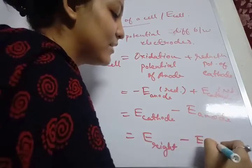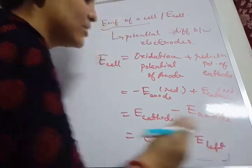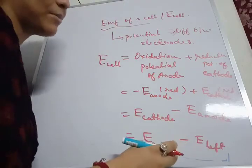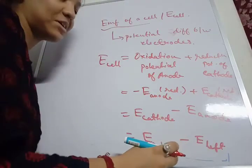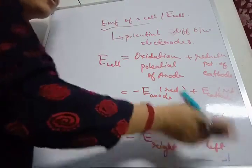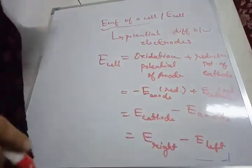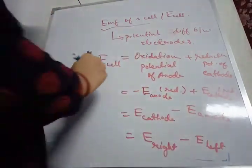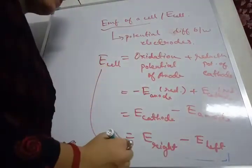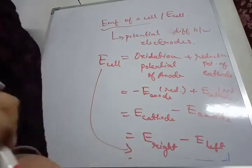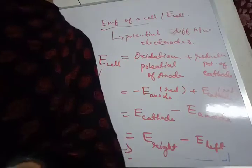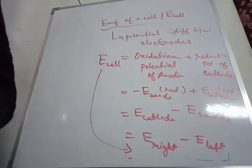This is because in the cell representation, the right compartment represents the cathodic compartment and the left one represents the anodic compartment. So this is basically your EMF of a cell, arising due to the potential difference between the two electrodes.